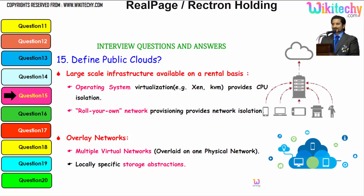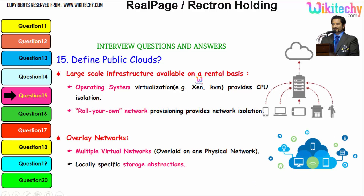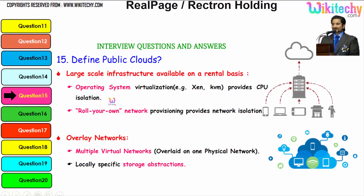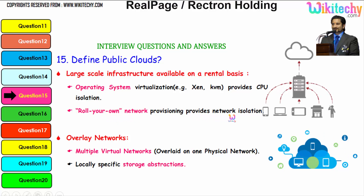Its pay-as-you-go model helps startups to start small and go big. It offers a large-scale infrastructure available on a rental basis. Virtual machines like ZenVM and KVM are typical examples — they provide CPU isolation, roll your own network provisioning, and provide network isolation.